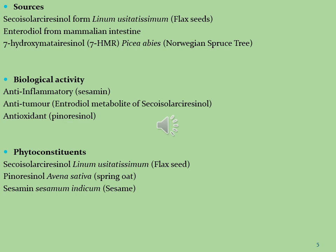Lignans are isolated from different species and genera of plants. Secoisolariciresinol is isolated from flax seeds, enterodiol is isolated from mammalian intestine, and 7-hydroxymatairesinol is isolated from Picea abies. The biological activities: sesamin is used as an anti-inflammatory drug, enterodiol is used as an anti-tumor drug, and pinoresinol is used as an antioxidant drug. Important phytoconstituents present in different plants are secoisolariciresinol, pinoresinol, and sesamin.